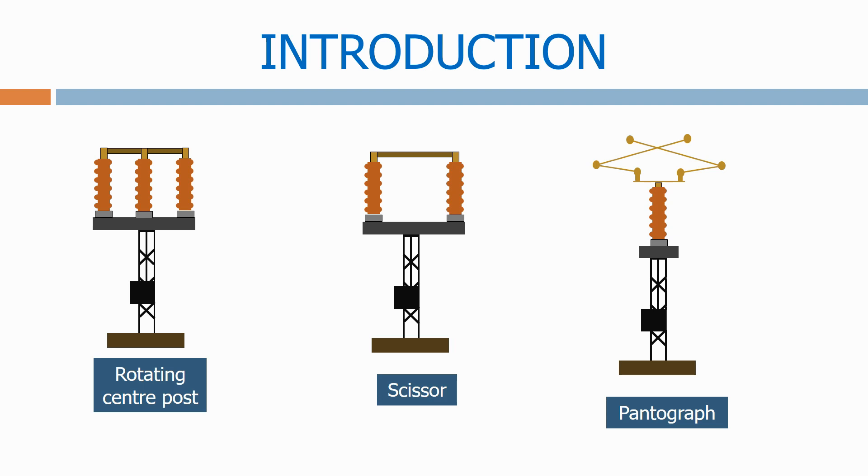In the next section we look at isolators. These are used on the network to disconnect sections of the busbar so that safety permits can be issued and people can work safely on the substation equipment.